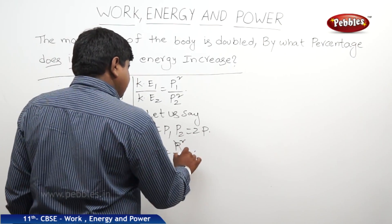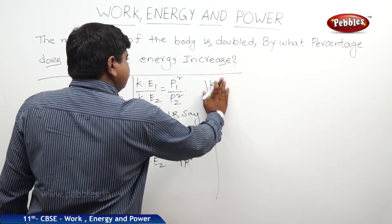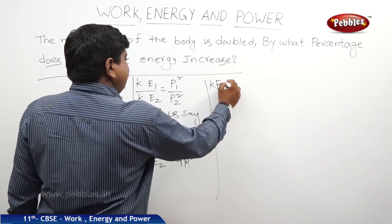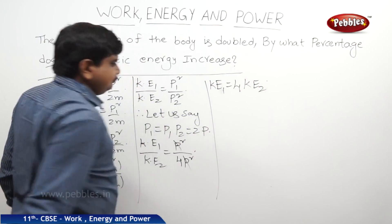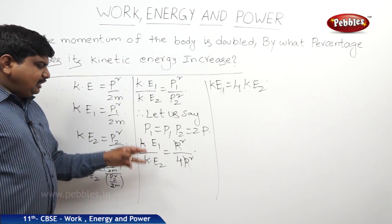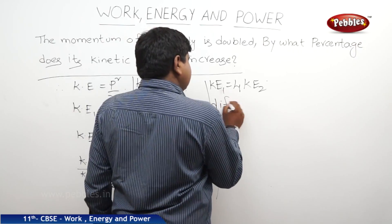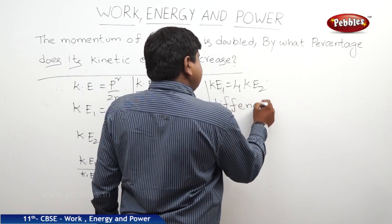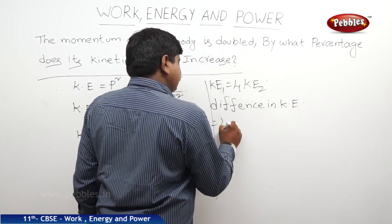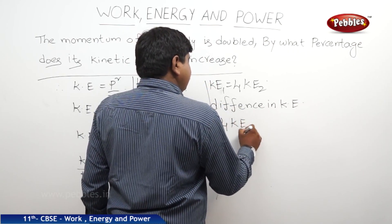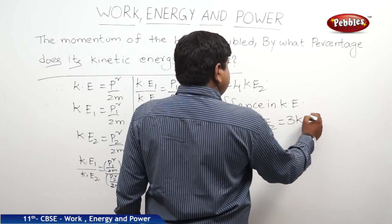The P squared terms cancel, so KE1 is equal to 4 times KE2. Therefore the difference in KE is equal to 4·KE2 minus KE2, giving a difference of 3·KE2.